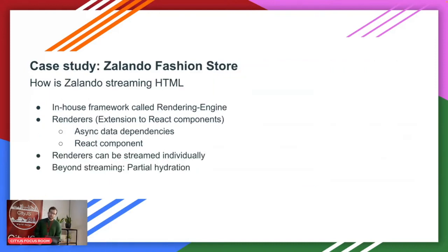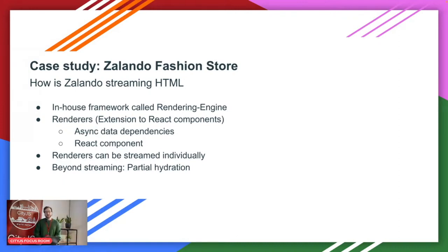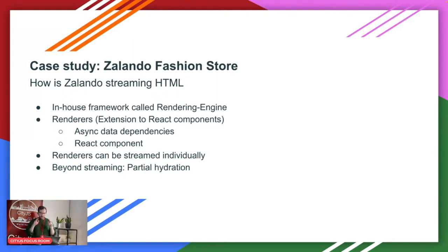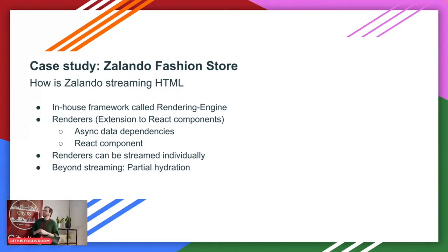Now I want to go into a real-world example of how we do it at Zalando. At Zalando we use an in-house framework called Rendering Engine — think of it as an internal Next.js-like thing that sits on top of React and adds utility functions to make it as easy as possible to create components. What we do essentially is that these renderers — which are React components with some sort of data dependency, like a product card that renders visual content but also needs to fetch data from an API — each of these renderers are streamed individually.